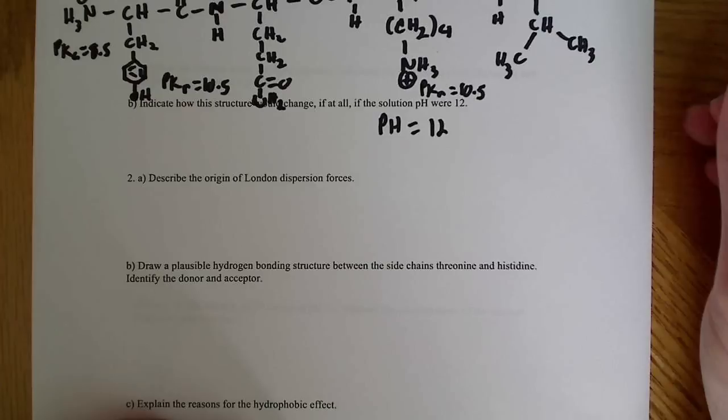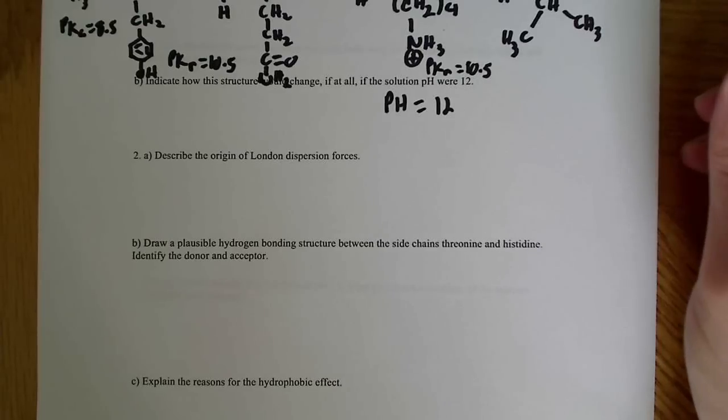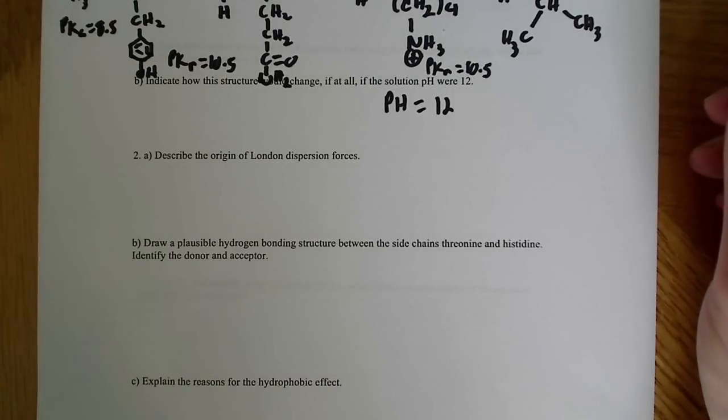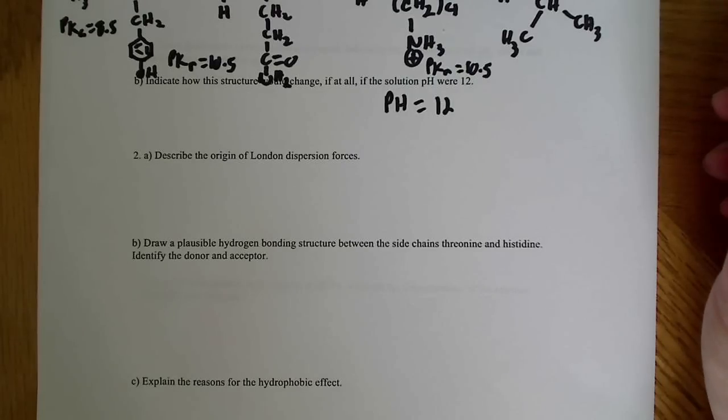Moving on to this second question here, it says describe the origin of London dispersion forces. And I talked briefly about this before in another video, and I'm not going to go into too much depth here, other than to say that London dispersion forces are the weakest of the intermolecular forces. And at any given point, a non-polar bond can exhibit polar character caused by unequal distribution of electrons about the bond.